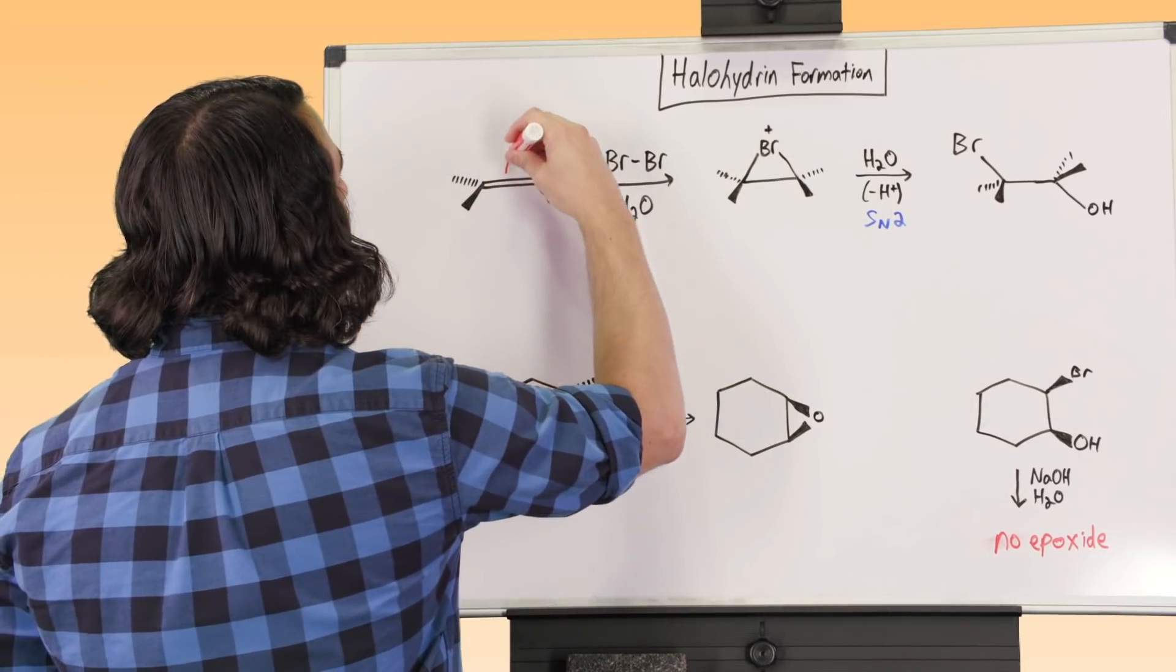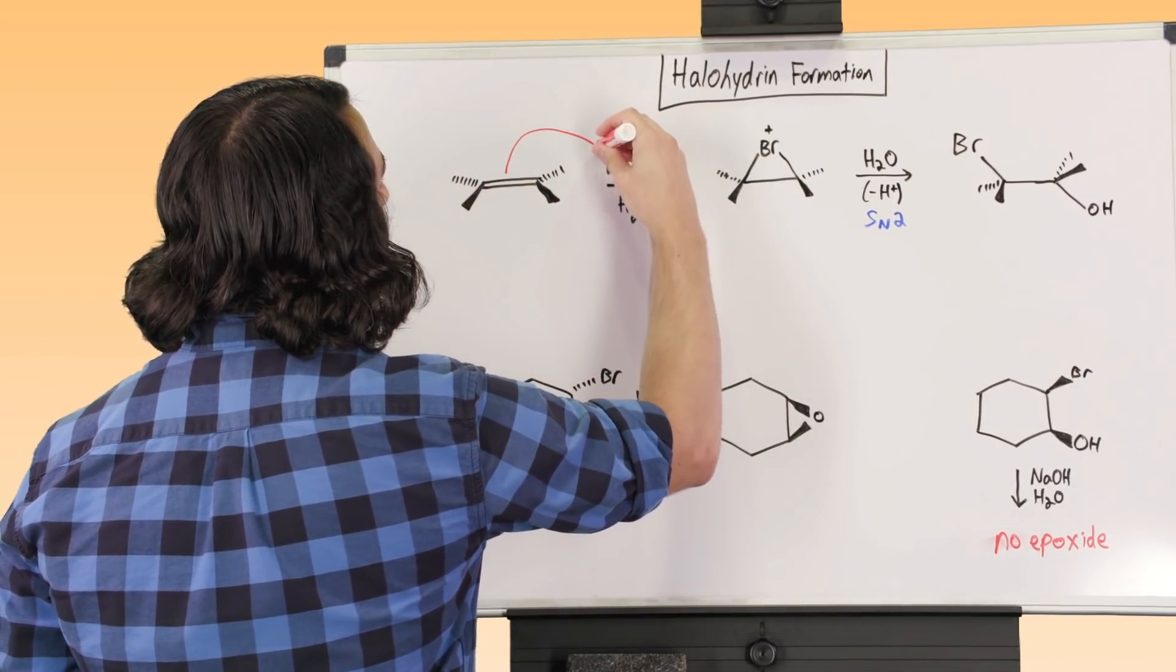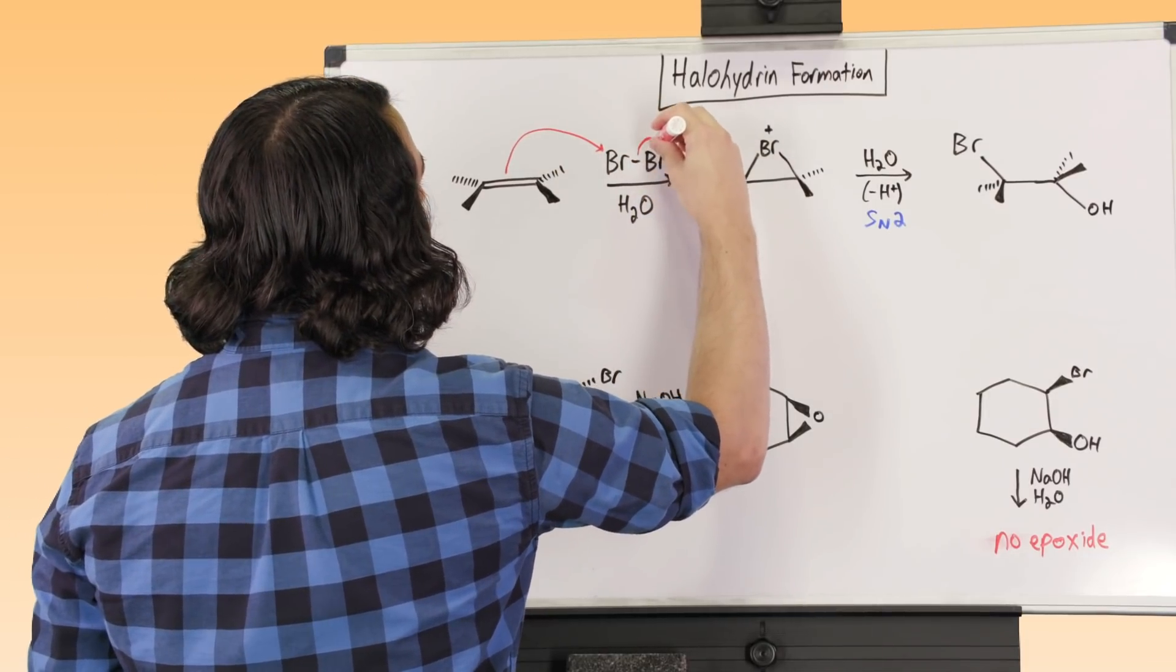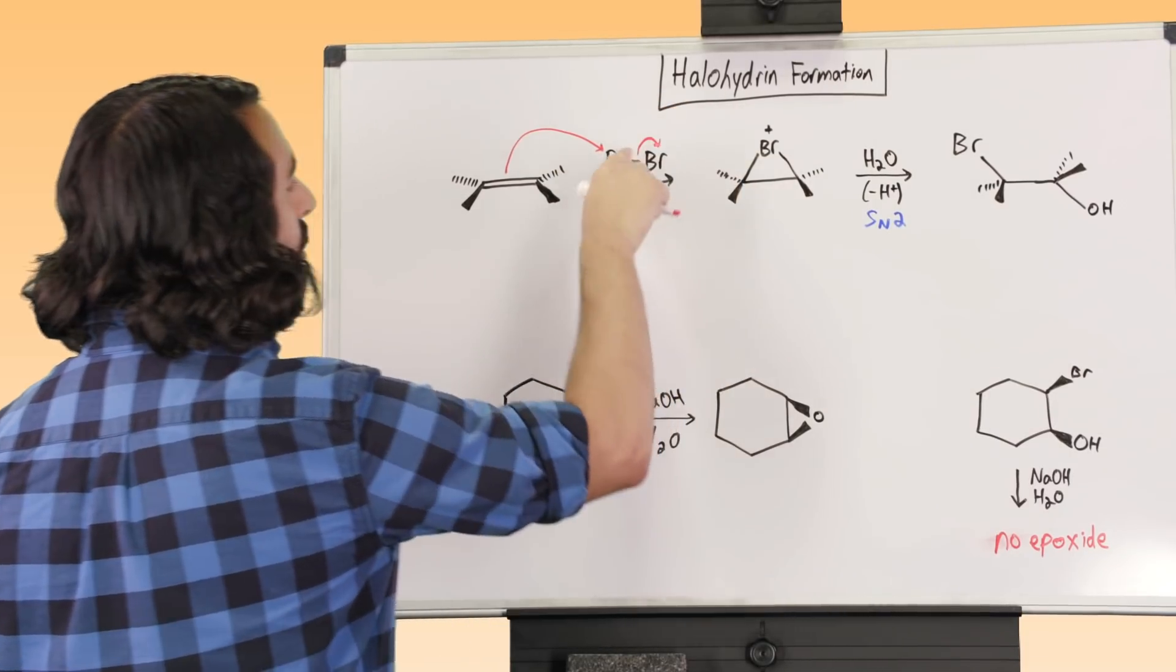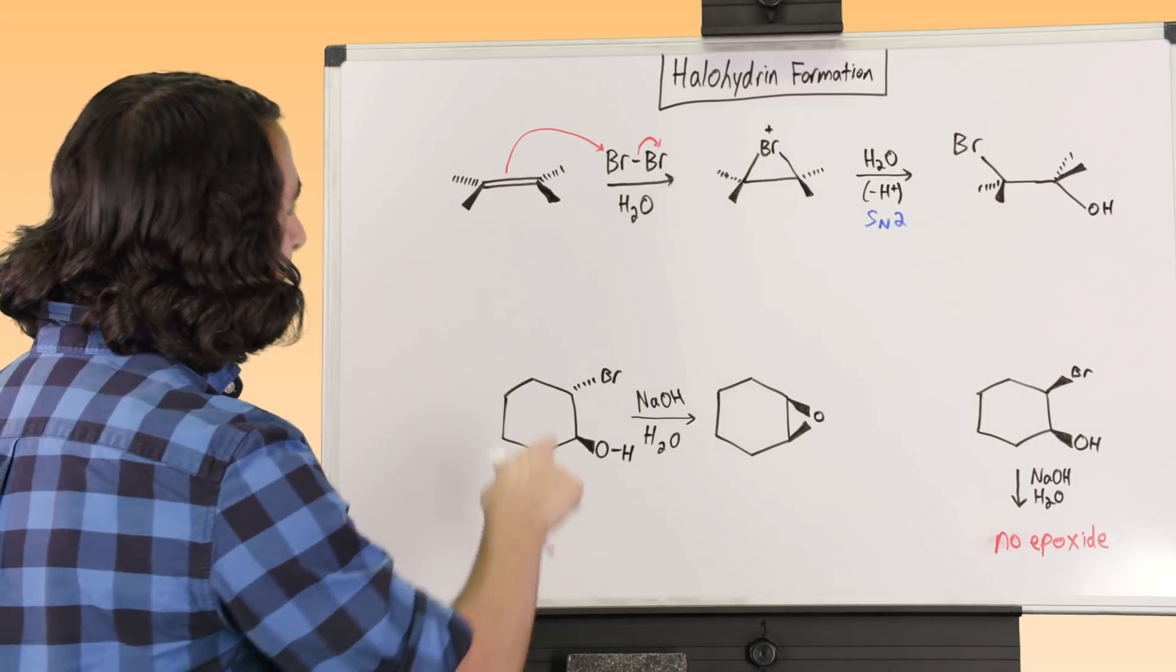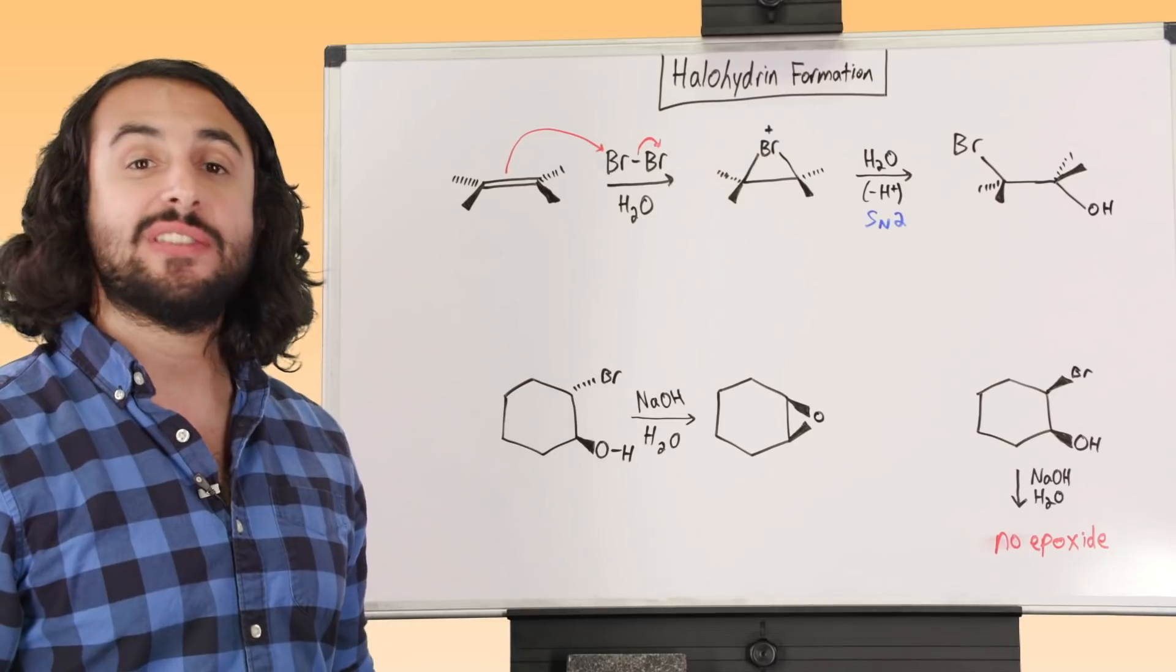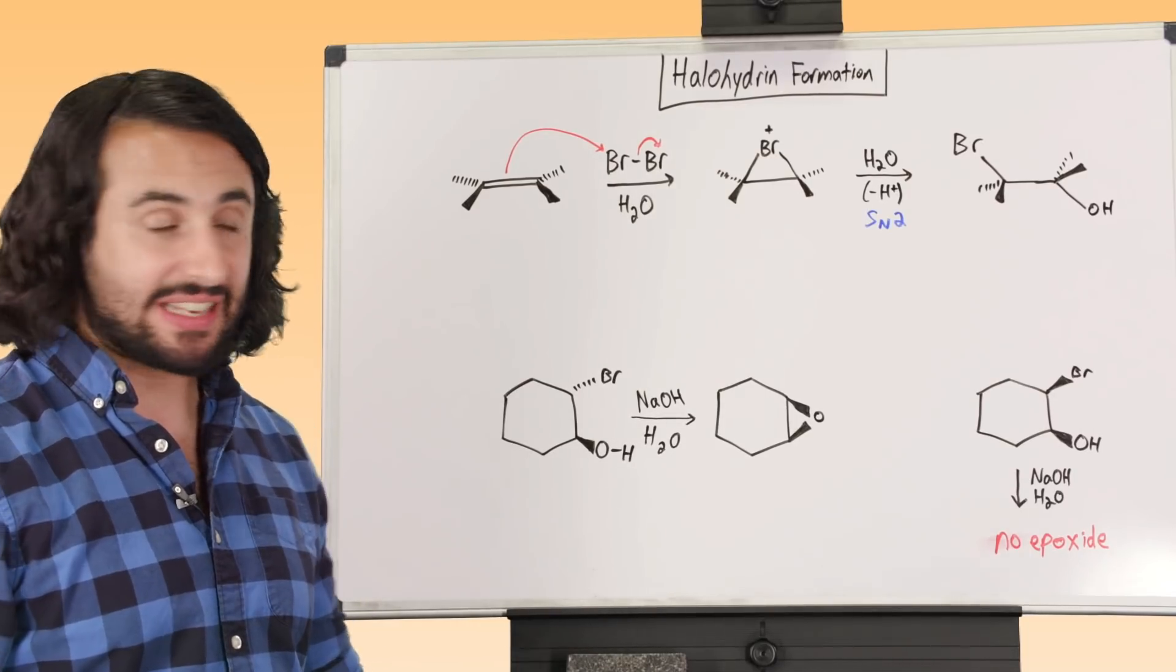Let's go ahead and do the first step, just like it was dihalogenation. So we know that this pi bond can interact with bromine in such a way that one of these bromine atoms will now be on the molecule, we'll kick that off there, and we'll make this bromonium ion intermediate. So this is no different than dihalogenation, it's the same first step.